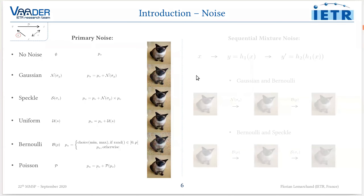Let's talk about noise models. Most known noise models are made of primary noises such as Gaussian, Speckle, Uniform, Bernoulli, or Poisson noises.